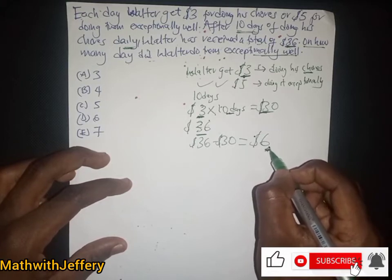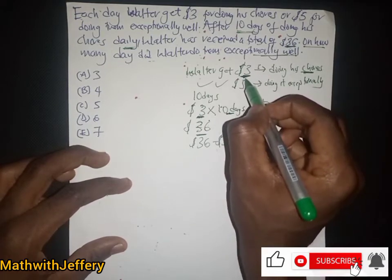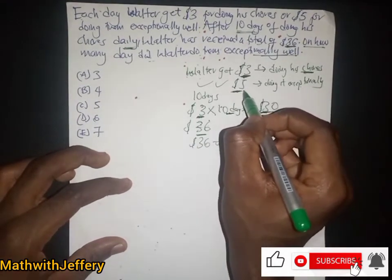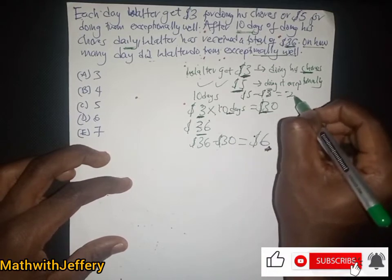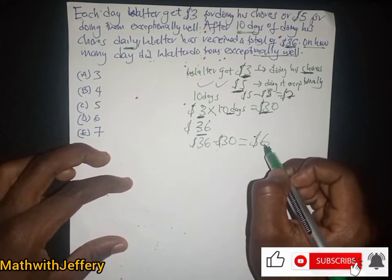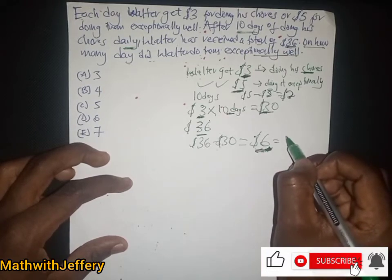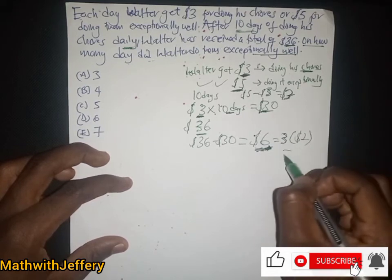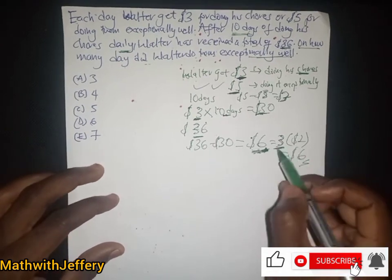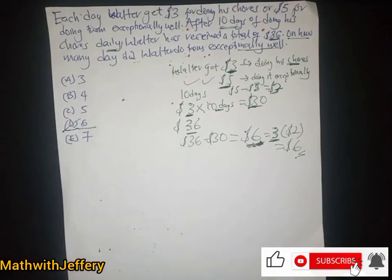Water has received six dollars for doing them exceptionally well. On a normal day, Water receives three dollars, but exceptionally well earns five dollars. So five dollars minus three dollars gives two dollars extra per exceptional day. Since Water earned six dollars extra, that means six divided by two gives three days. Water did the chores exceptionally well for three days. The answer is D. Thank you very much for joining me in this session and I'll see you in another section.